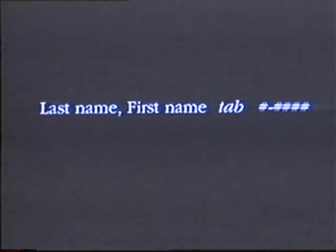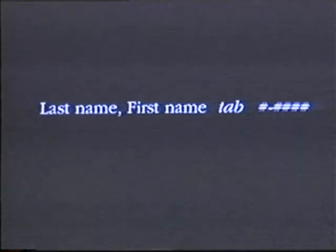It's always the last name, a comma, a space, the first name, a tab, and then a phone number. Note the phone number has a specific format: it's always a number, a dash, followed by four numbers. In addition, there are no spaces or any other characters after the last number on each line.